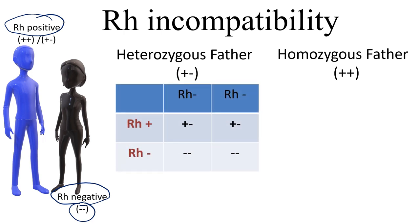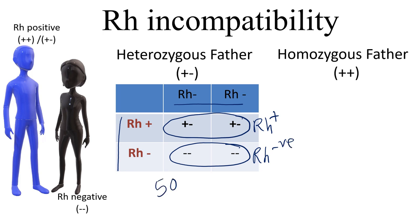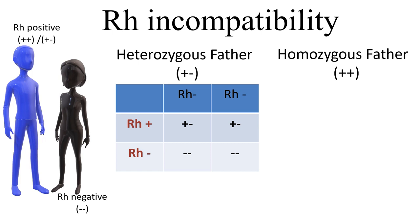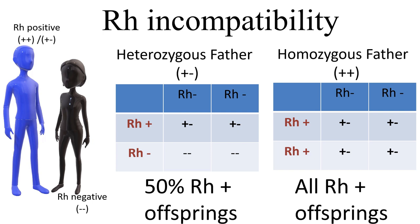If the father is heterozygous for the RH factor, there is a 50% chance of having an RH positive offspring. As seen in this Punnett square, with an RH negative mother and a plus-minus father, two genotypes are plus-minus giving RH positive phenotype, and two are minus-minus giving RH negative phenotype — so 50% chance of an RH positive child. However, if the father is homozygous plus-plus, there is a 100% chance the offspring will be RH positive, since all offspring receive one positive allele from the father.